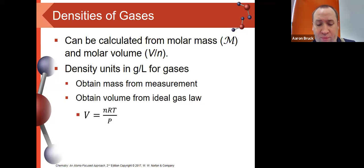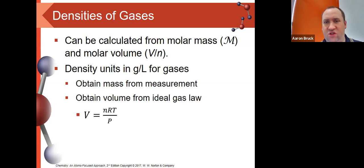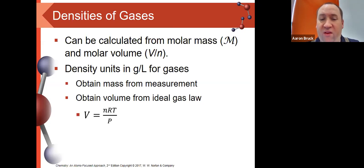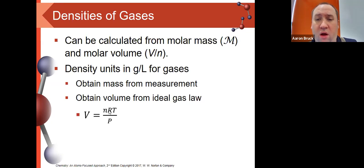But what if we're not at STP? Then we have to follow a slightly different process that involves the ideal gas law. Keep in mind that density involves units of grams per liter. How we usually get this is by measuring the mass of a gas in a laboratory — we take a sample of gas, weigh it on a balance, and then find the volume from there using the ideal gas law. The volume comes from V = nRT/P: the moles of gas times the constant times the Kelvin temperature divided by the pressure.